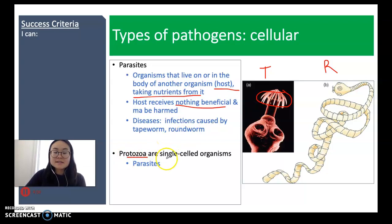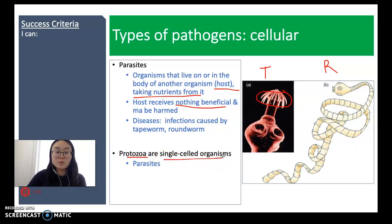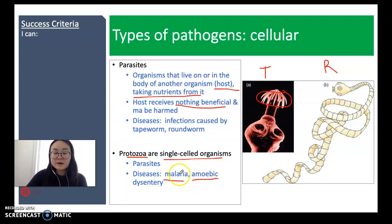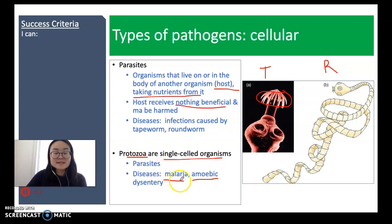Protozoa are single-celled organisms — again very small, made up of only one cell. They are another example of parasites. You've probably heard of malaria, and you might also have heard of amoeba. These are examples of diseases caused by protozoa.